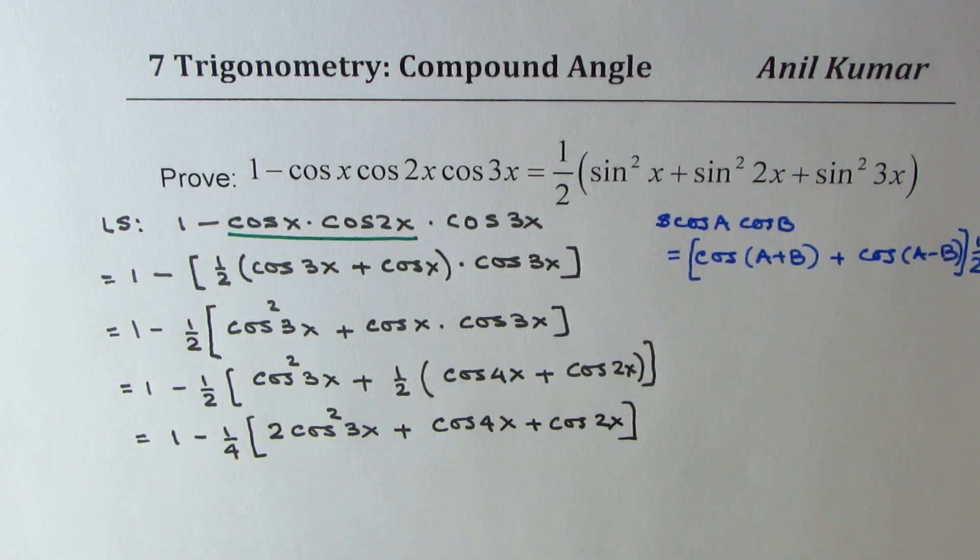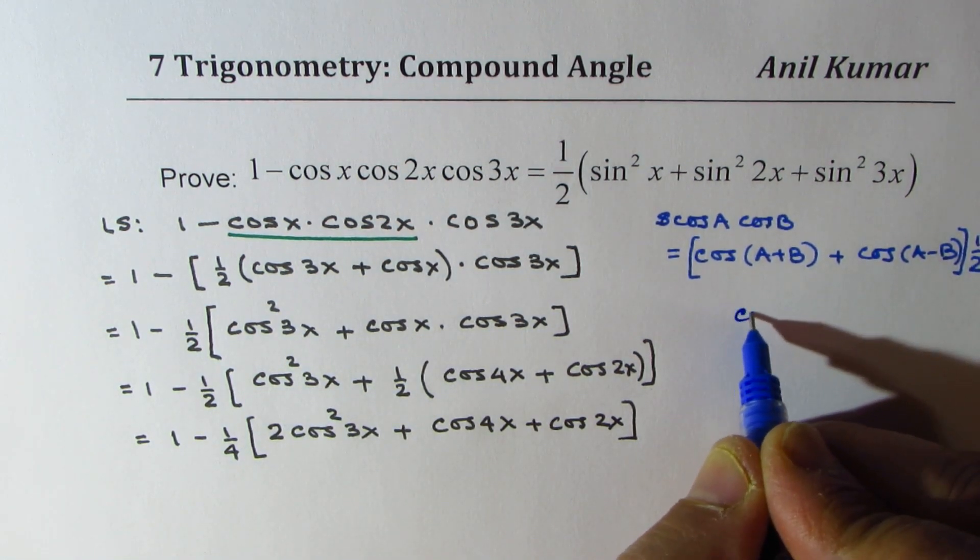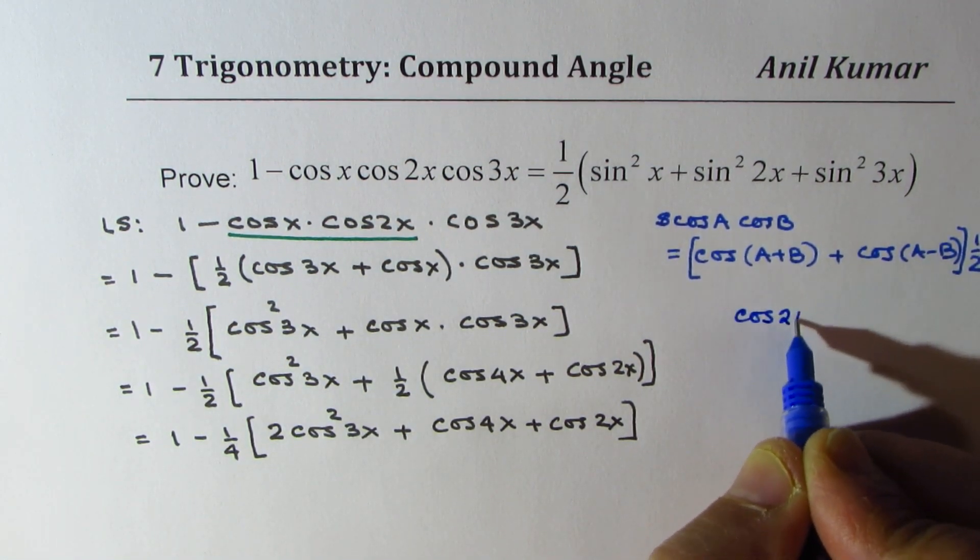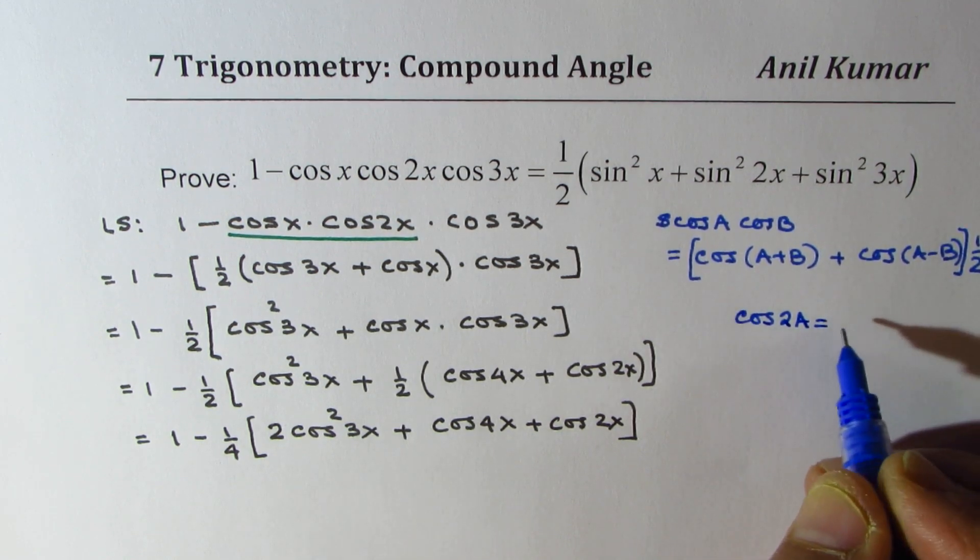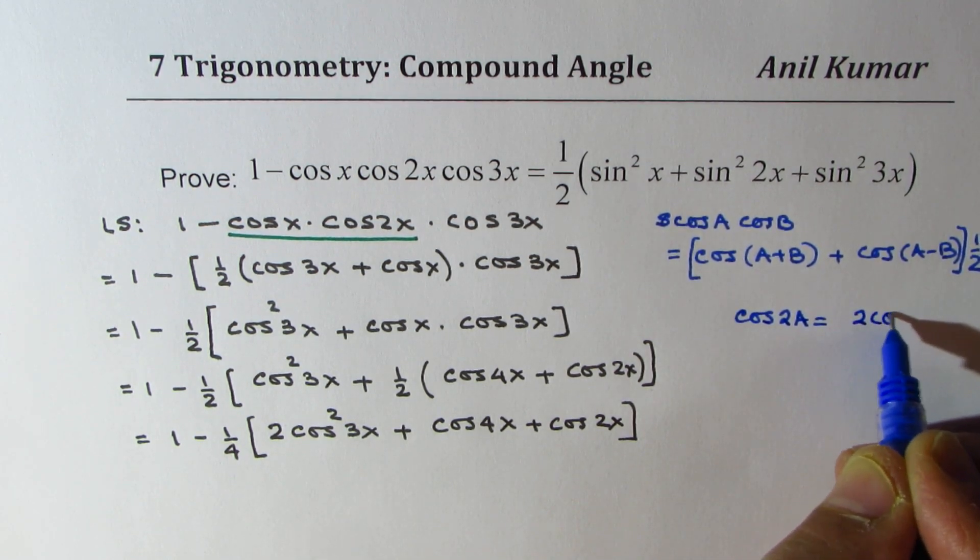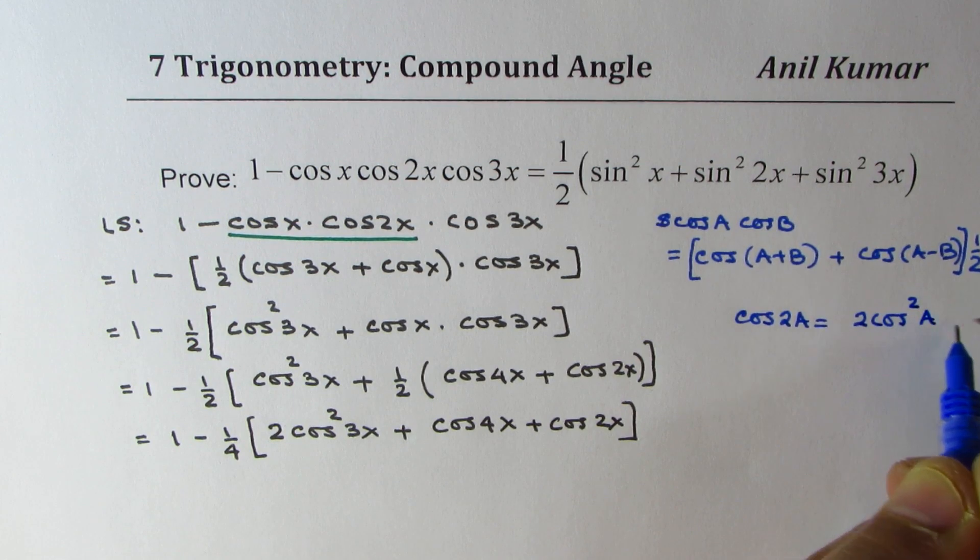Now, at this stage, what you can do is that you could use half angle formula for this portion. So, we know cos 2x, let's say cos 2a is equal to 2 cos square a minus 1.